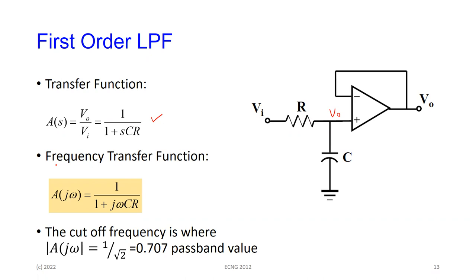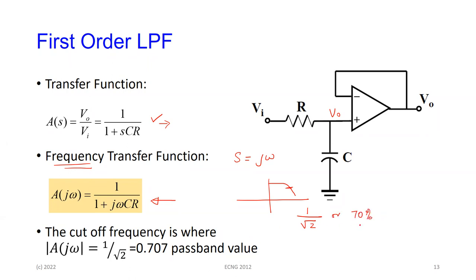The transfer function V_out/V_in for this simple RC network is found using the impedance divider. Substituting s = jω gives the frequency transfer function. We define the cutoff frequency as the frequency where the amplitude drops to 1/√2, or approximately 0.707 — about 70% of the passband value. That is the standard definition used for any filter: the cutoff frequency is where the passband drops to 0.707 of its passband value.